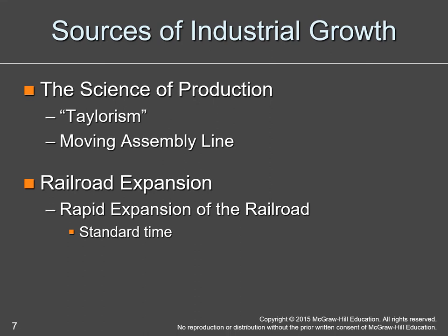Railroad expansion was another major development. Earlier in the 1800s railroads weren't efficient because of different gauges — they were independent of one another so you couldn't create a network. Now they create a standard time to avoid mishaps. Railroads are the most important industry of this time because of their multiplier effect: to build a railroad you need steel, coal, lumber, and finance, creating demand across all these other industries.